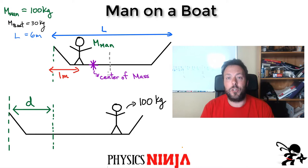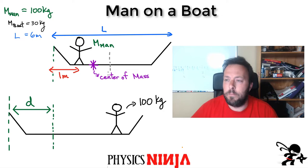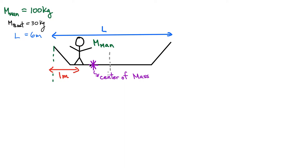Let me show you a quick way and then a more mathematical approach. Initially, the man is one meter from the edge of the boat. I'll represent the boat's total mass of 30 kilograms as a point mass at its midpoint. I'll pick an origin at the near edge of the boat and calculate everything relative to that position.